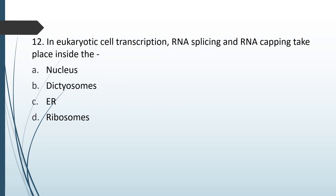In eukaryotic cell transcription, RNA splicing and RNA capping takes place inside the: nucleus, dictyosome, ER, or ribosome. The correct answer is option A — nucleus.